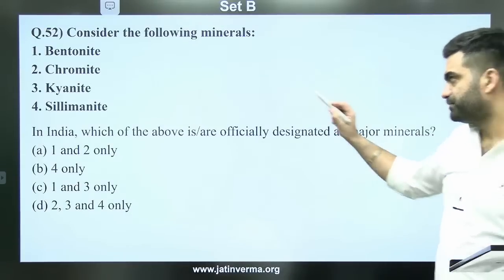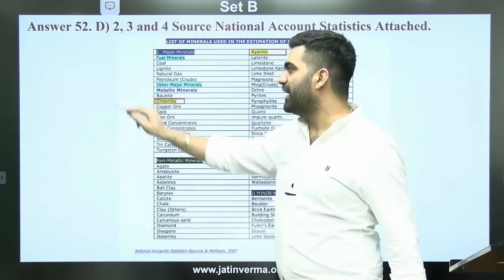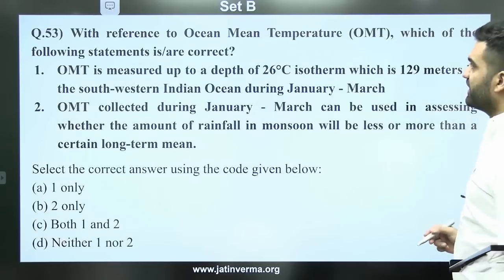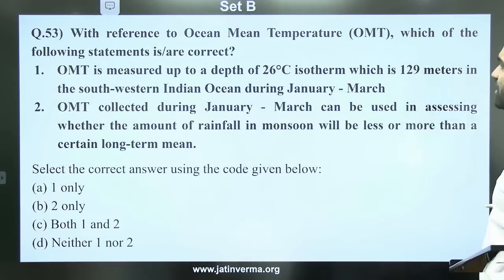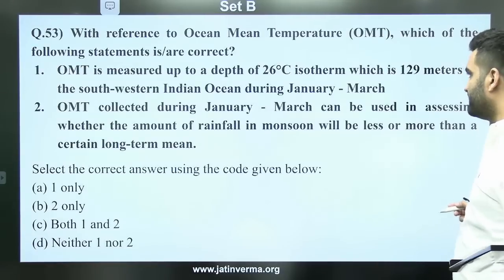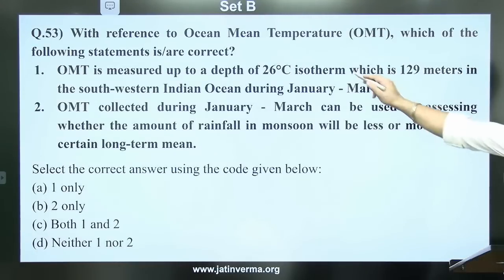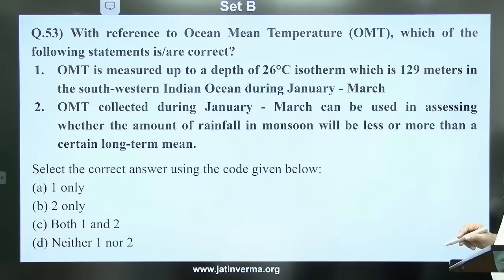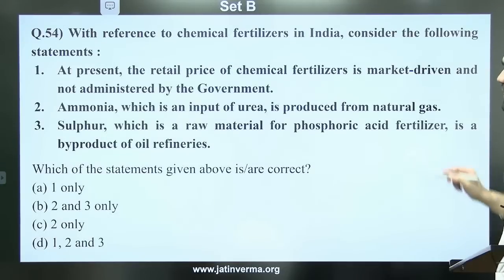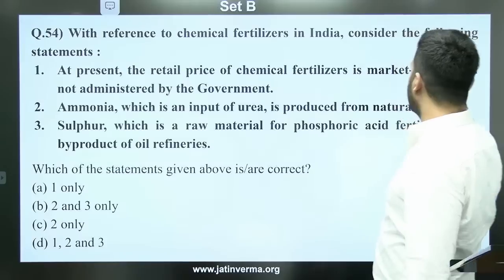Question 53: With reference to ocean mean temperature (OMT), which of the following statements is correct? OMT is measured up to a depth of the 26-degree Celsius isotherm. The answer to question 53 is B — 2 only. Explanation can be read in the PDF.